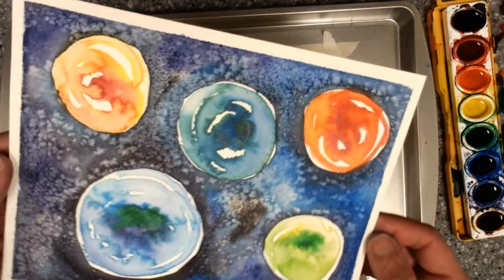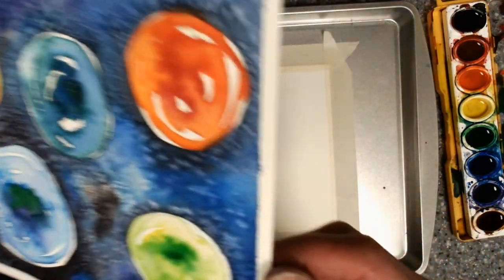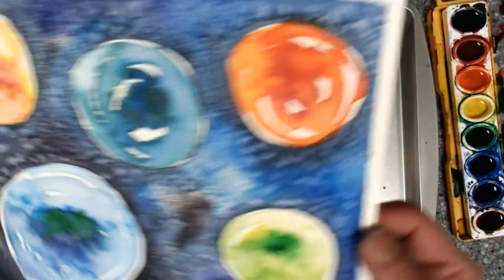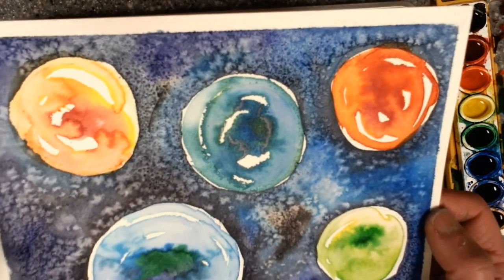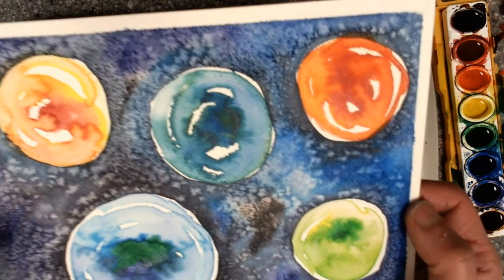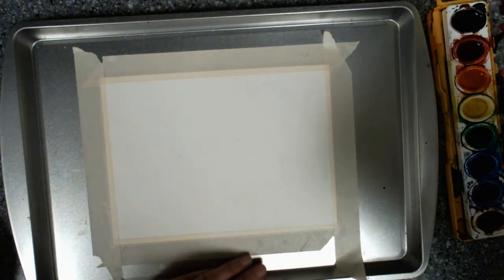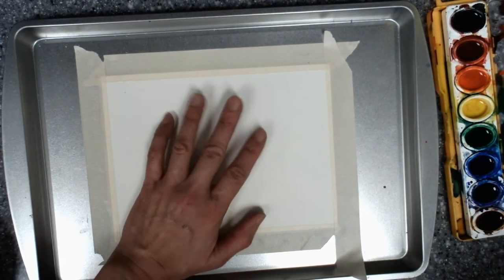Next up is a really cool space scene of planets in space. You definitely want to use the watercolor paper for this, the thicker one. And if you can tape it down on something like a craft tray. Because you will use a lot of water with this.